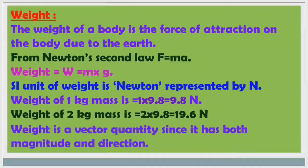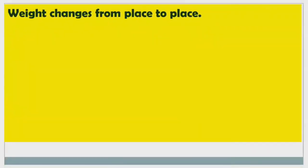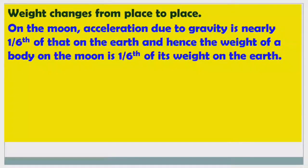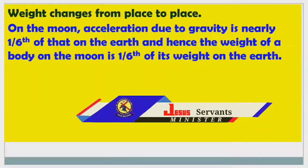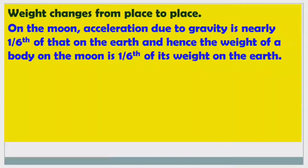Weight is a vector quantity since it has both magnitude and direction. Weight changes from place to place — on the moon, weight will be different from on the earth. On the moon, acceleration due to gravity is nearly 1/6th of that on the earth. Hence, the weight of a body on the moon is 1/6th of its weight on the earth.